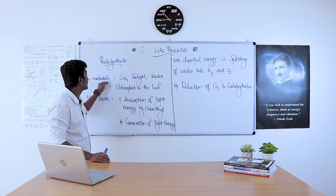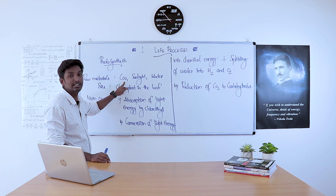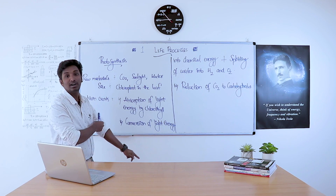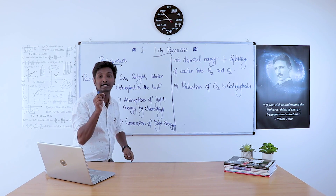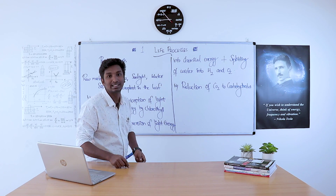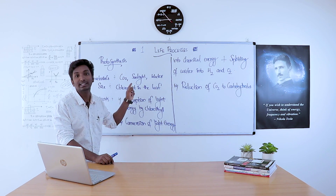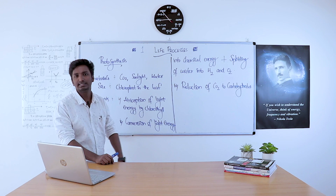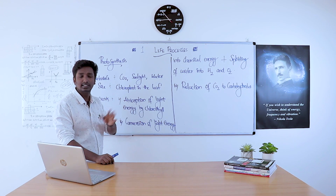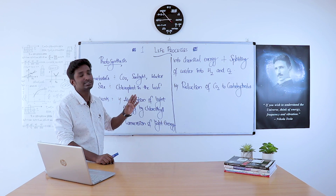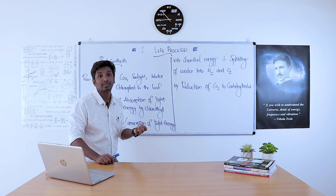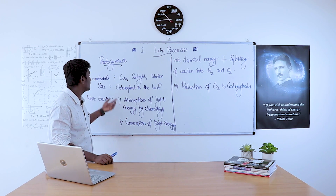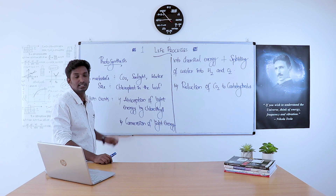The main raw materials for photosynthesis are carbon dioxide, sunlight, and water. Carbon dioxide enters through small tiny holes on the leaves called stomata. Oxygen is released to the environment through the same stomata. Sunlight is absorbed by chlorophyll in the leaf.